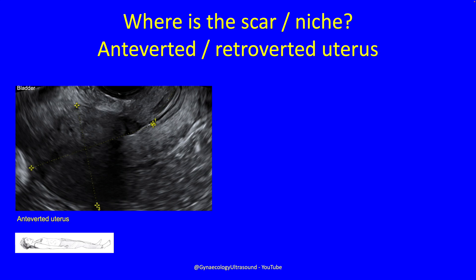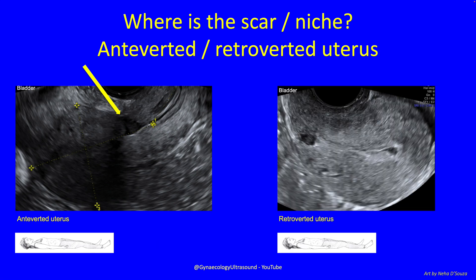When you are looking for a scar or a niche, it depends where to look for an anteverted and a retroverted uterus. In an anteverted uterus, the uterine fundus points toward the bladder, and you can see that the caesarean scar and the niche is there in the anterior uterine wall. In a retroverted uterus, the uterine fundus points toward the patient's feet, but the section is still in the anterior uterine wall.